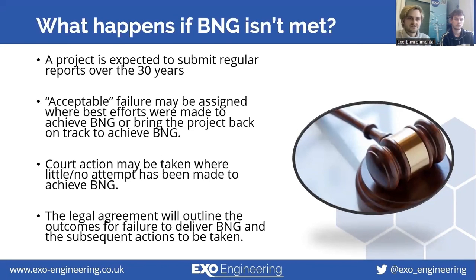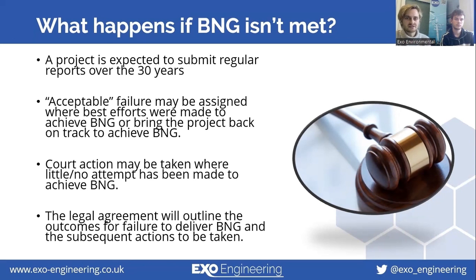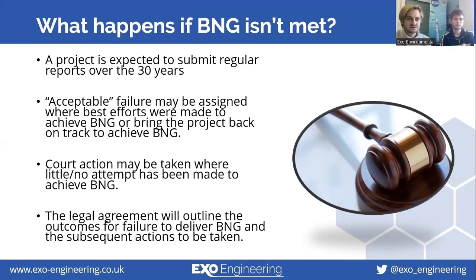We also briefly mentioned the implications if biodiversity net gain isn't met. The project is expected to submit regular reports over the 30 years for which the biodiversity units are guaranteed. Within this time period, there is a certain acceptable failure that can be assigned — this is where the best efforts have been made, monitoring has taken place as promised, and best efforts have been made to bring it back to the initial proposed biodiversity net gain. However, if this hasn't happened, court action may be taken where there has been no attempt to achieve the biodiversity net gain laid out in the initial net gain plan. At the planning stage, there will be a legal agreement outlining the outcomes for failure if biodiversity net gain is not taken into account.